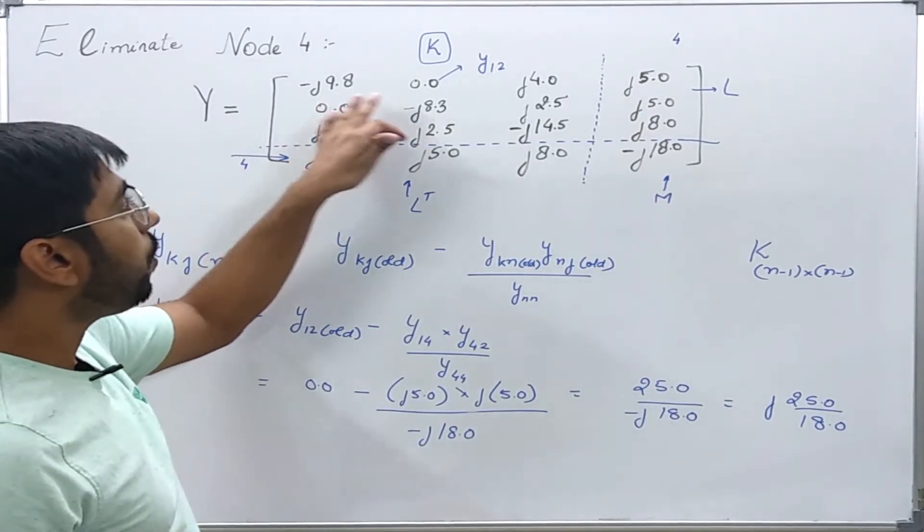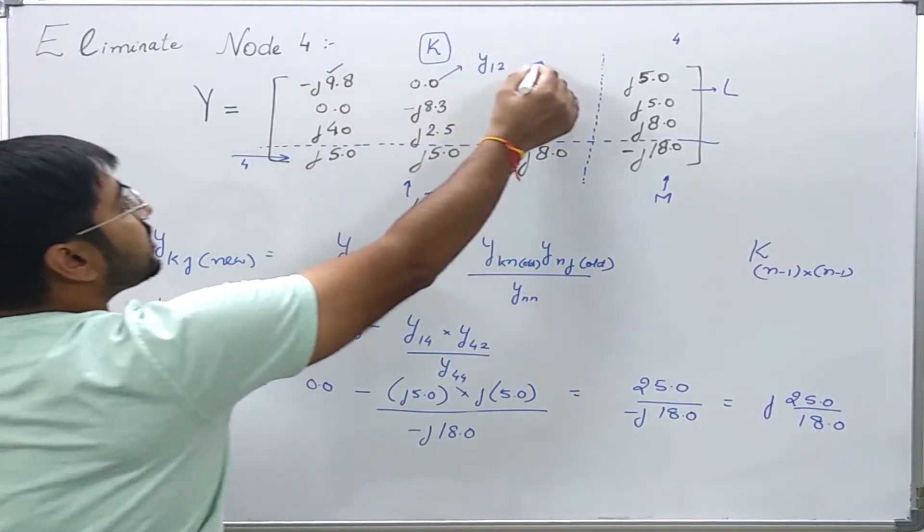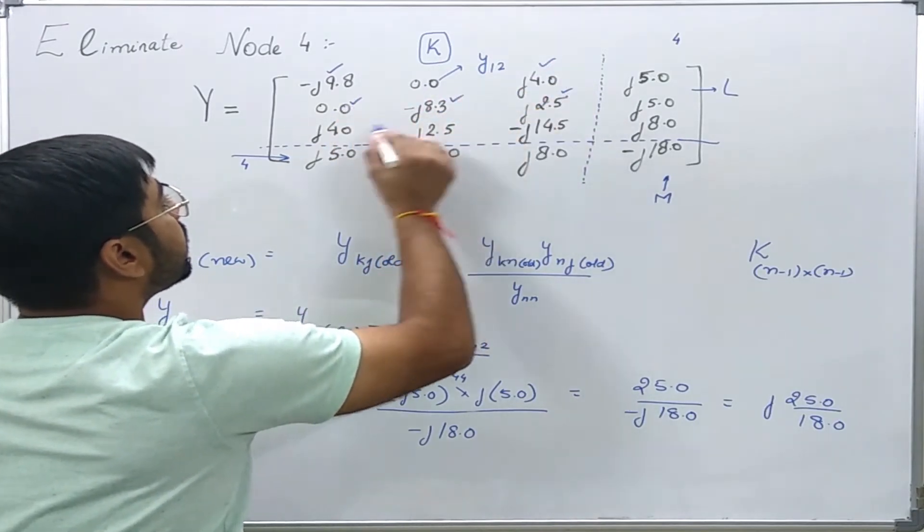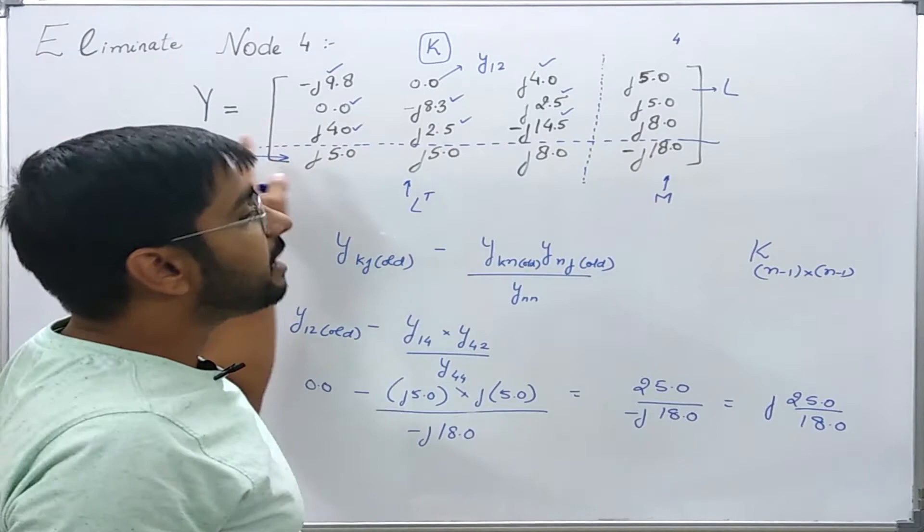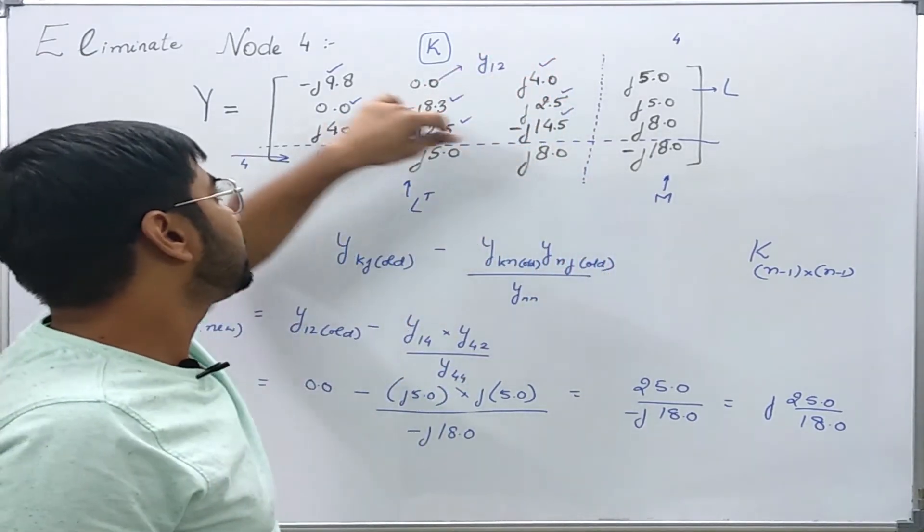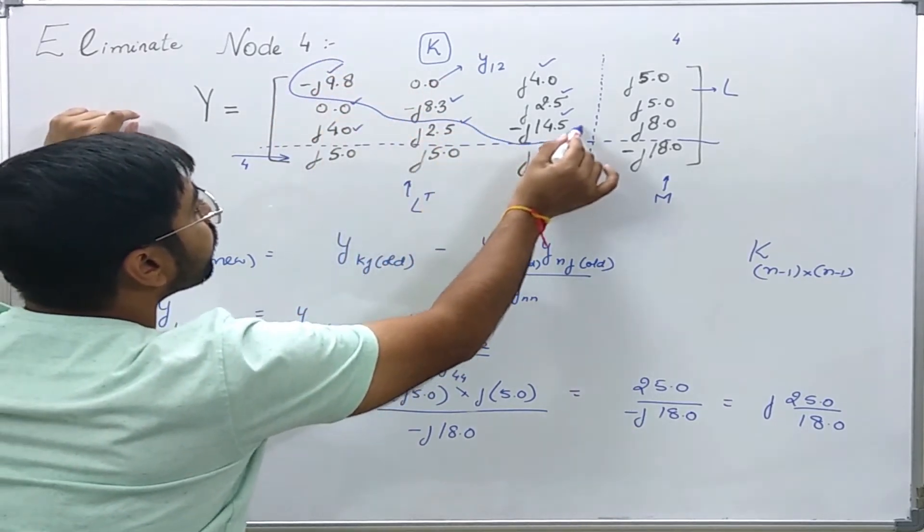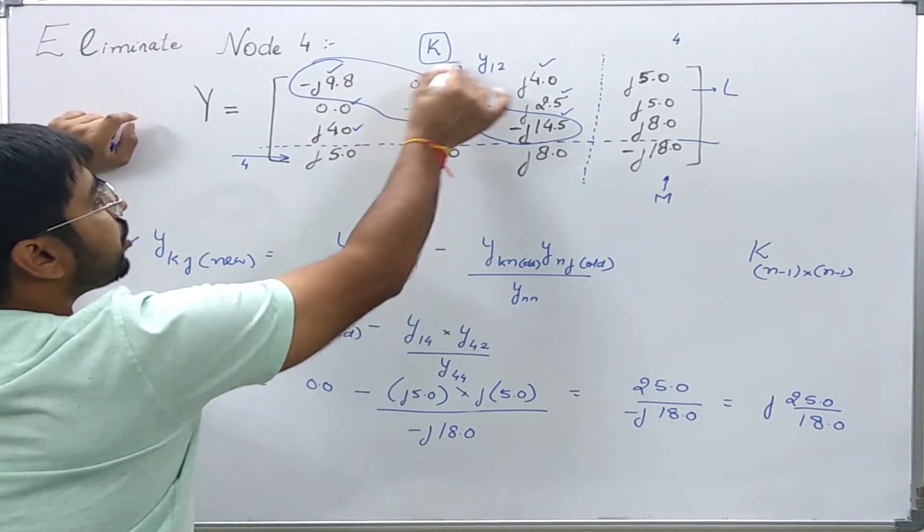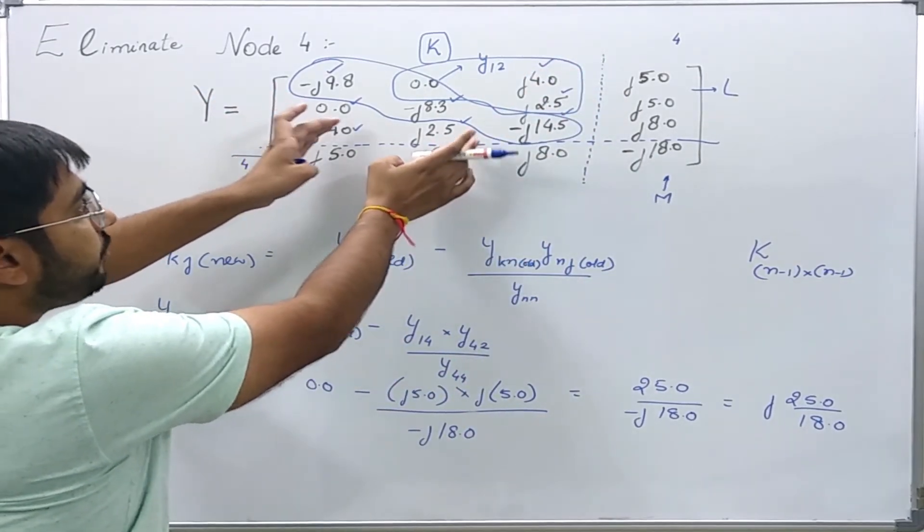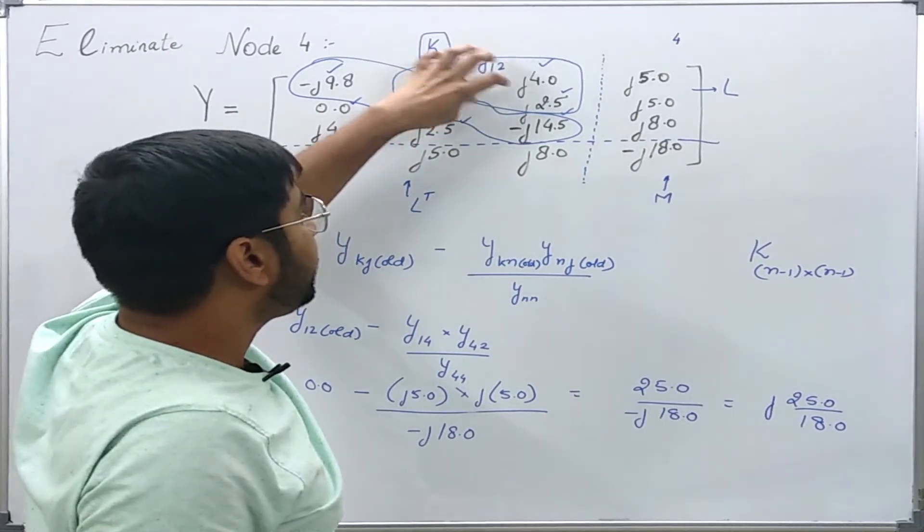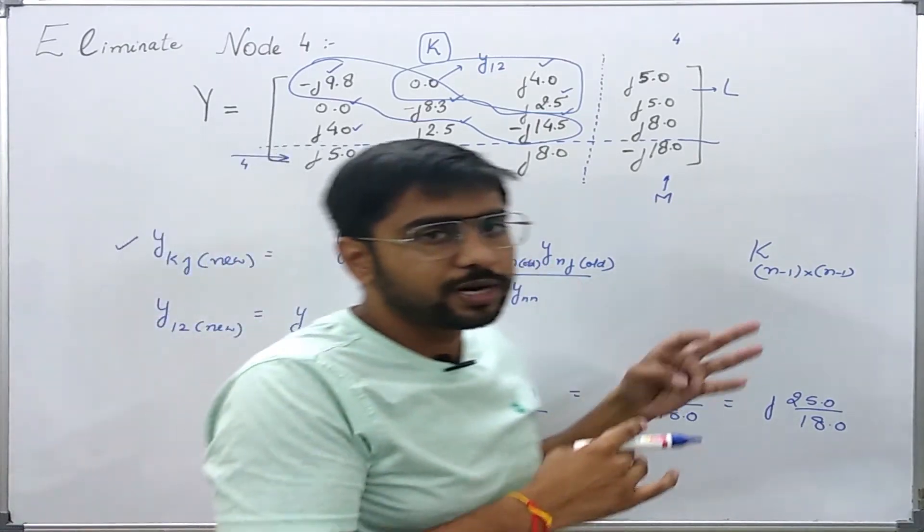Similarly, I can find all other elements, but I will have to utilize this formula 9 times because there are 9 elements. But you see, we can reduce the number of calculations if the given matrix is a symmetric matrix. Then I will have to determine only the diagonal elements and half of the non-diagonal elements, because the other half non-diagonal elements will be equal to the already calculated ones if the matrix is symmetric. However, we should try to find all the elements so that there is no doubt in our minds.